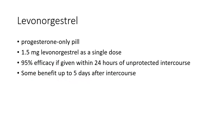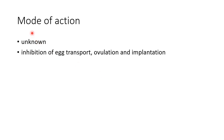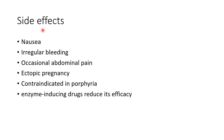Levonorgestrel can be given up to 5 days after sexual intercourse, but the efficacy is reduced. The exact mechanism of action of levonorgestrel is unknown. It is thought to inhibit egg transport, ovulation, and implantation.